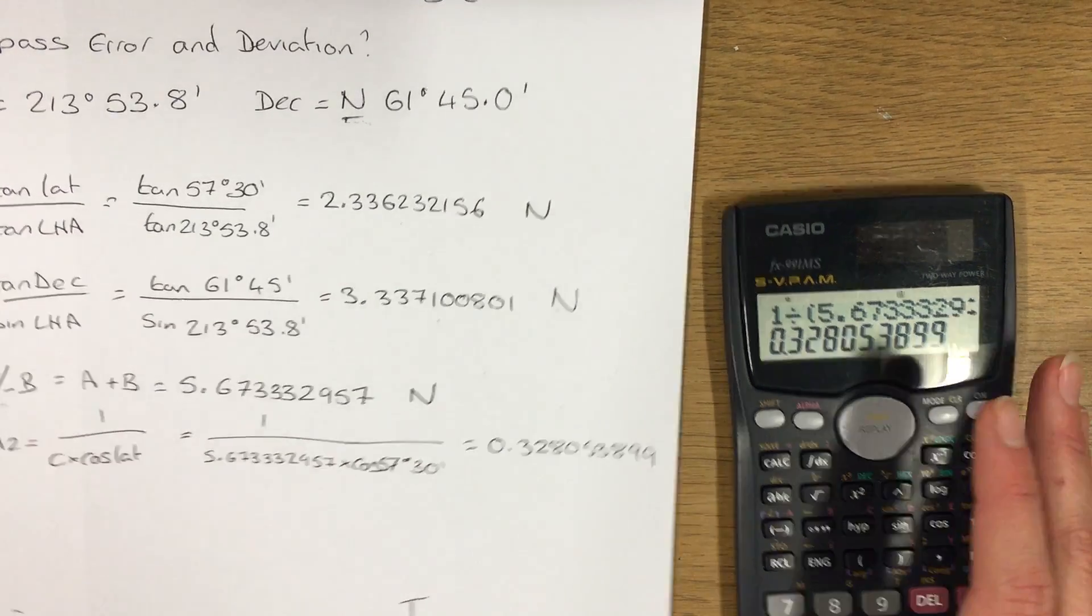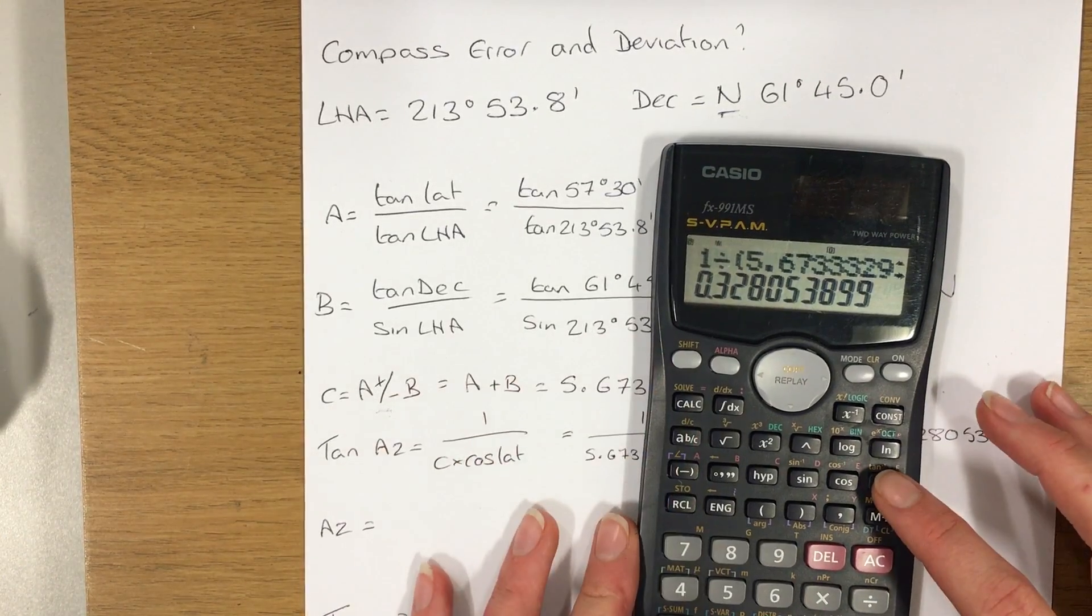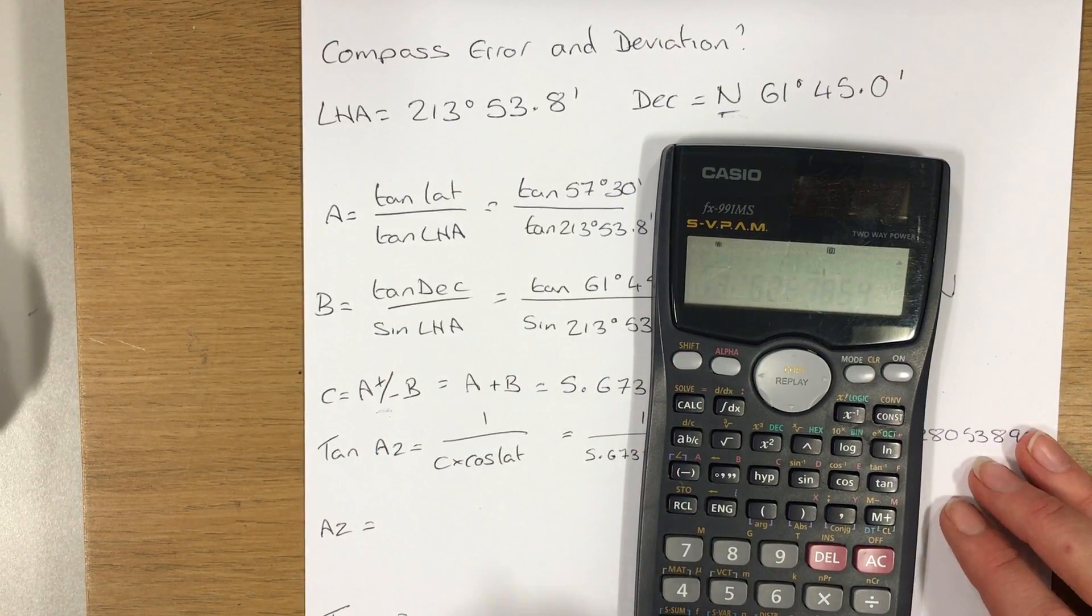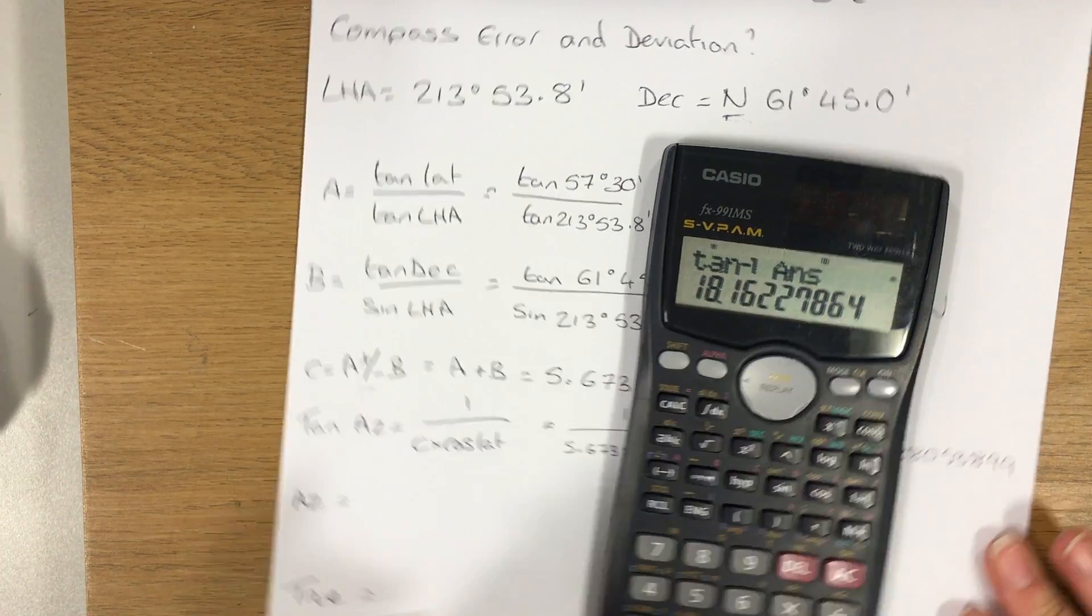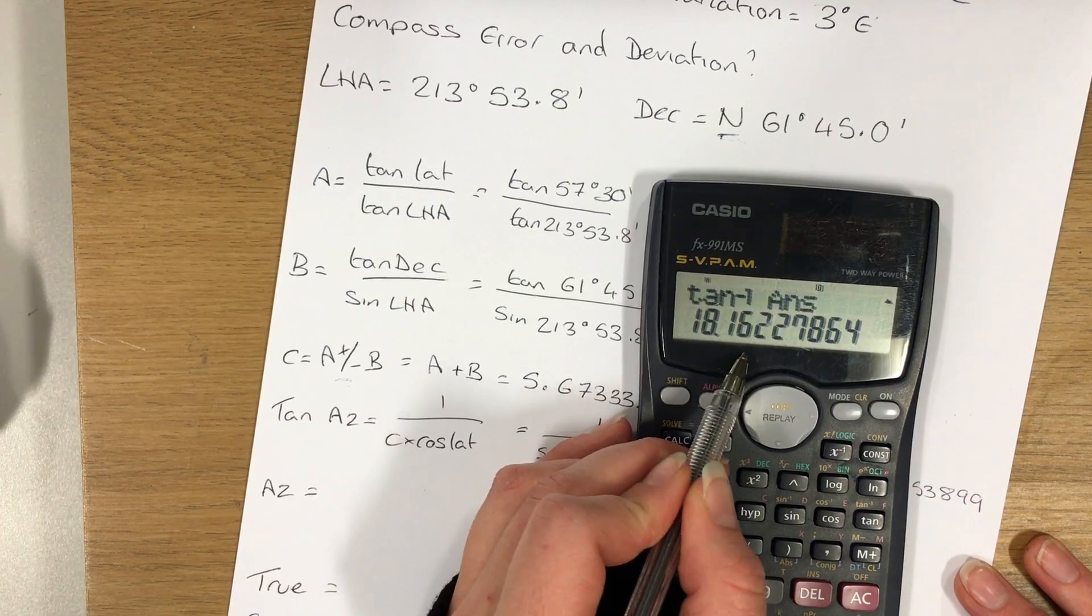Now that's the tangent of the azimuth. I want to find the actual value of the azimuth. So if I inverse tan that answer, that will give me the value for my azimuth. I just need to go to one decimal place now, so 18.2.